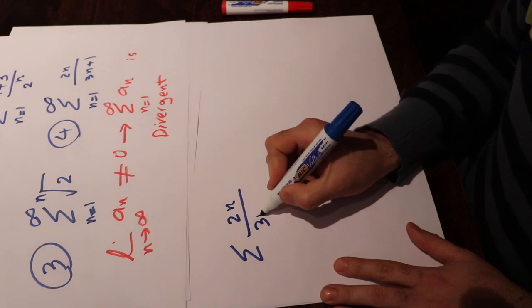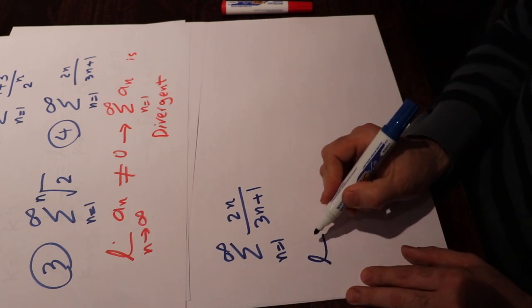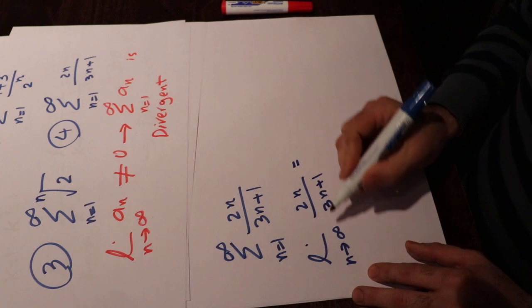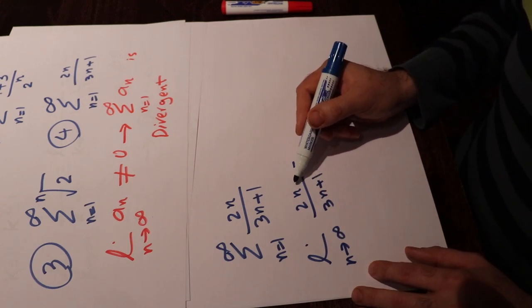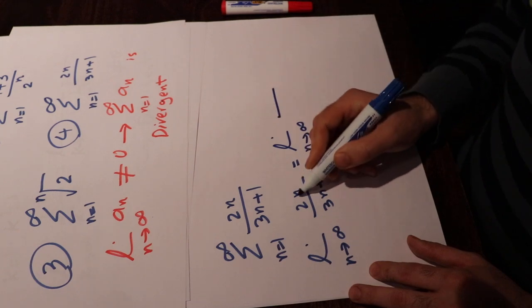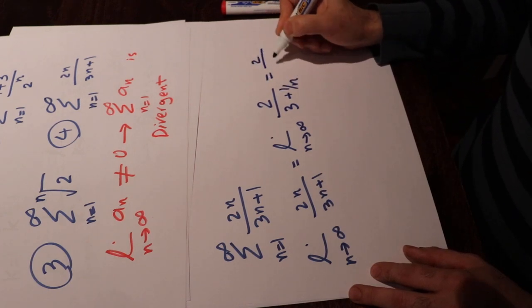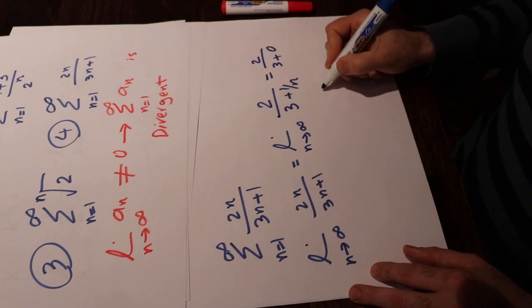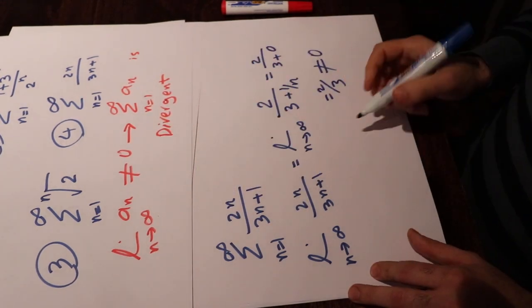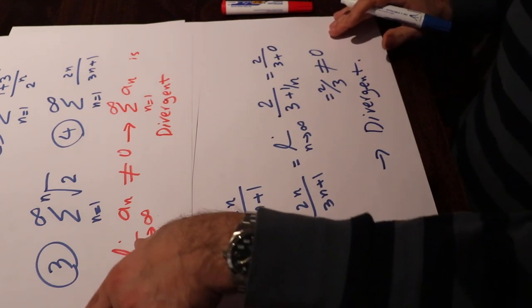Now let's look at the fourth series: sigma 2n divided by 3n plus 1, from n equals 1 to infinity. We calculate the limit of 2n divided by (3n plus 1) as n goes to infinity. Dividing numerator and denominator by n, we get 2 divided by (3 plus 1/n). As n goes to infinity, 1/n goes to 0, so the limit equals 2 divided by 3, which is not equal to 0. Therefore by the divergence test, this series is divergent.